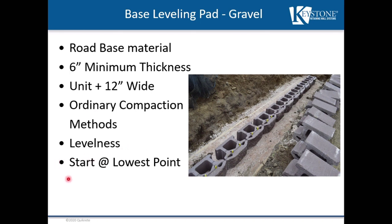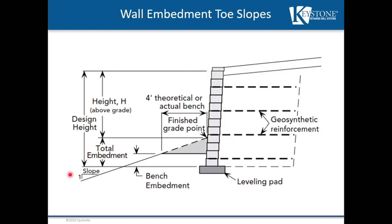We always start at the lowest point in our retaining wall. If we have a base that is stepping, we start at the low point and work out from there, and this helps control our batter during wall construction. Here we have a typical wall section, and for the purposes of this discussion we've added a slight toe slope to this typical section so we can talk about the minimum requirements for a sloping toe as well as a level toe.